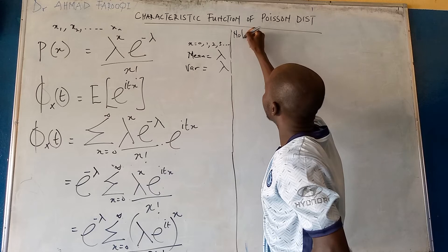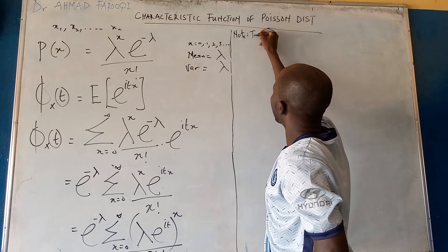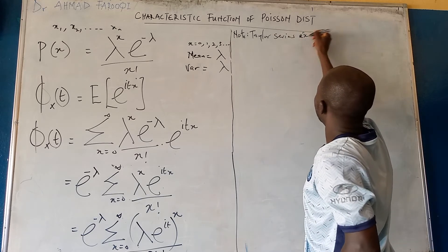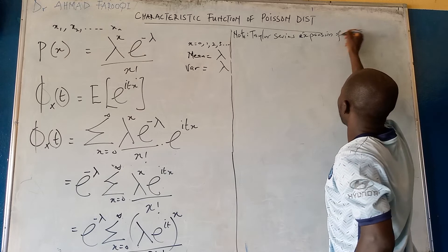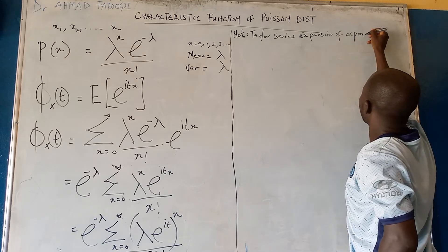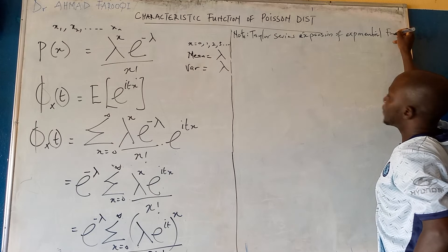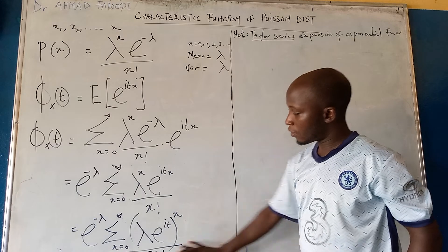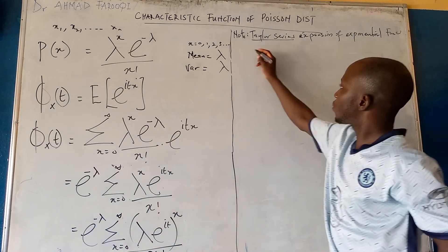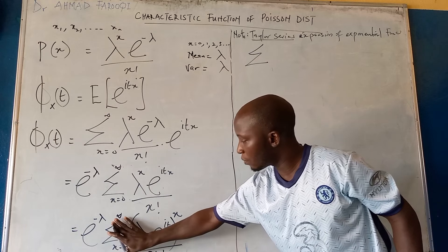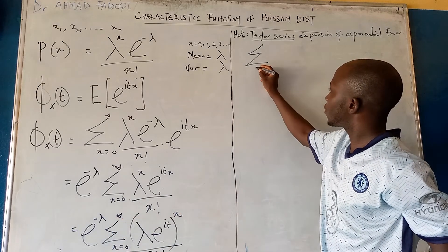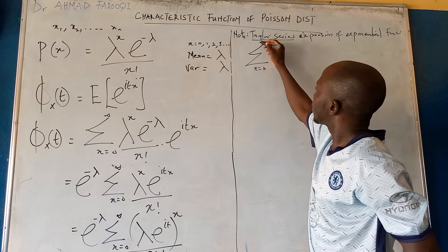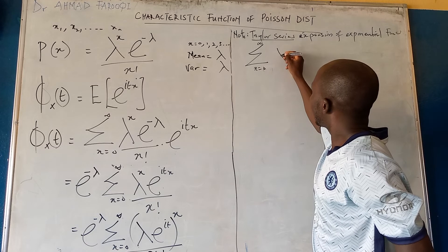This is now where we invoke the Taylor series expansion of the exponential function. Using the Taylor series to expand this summation will meet our solution, with x running from zero to positive infinity.